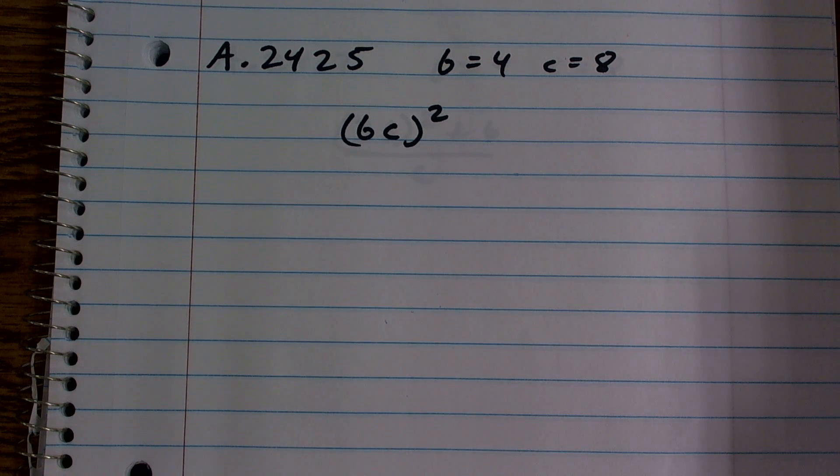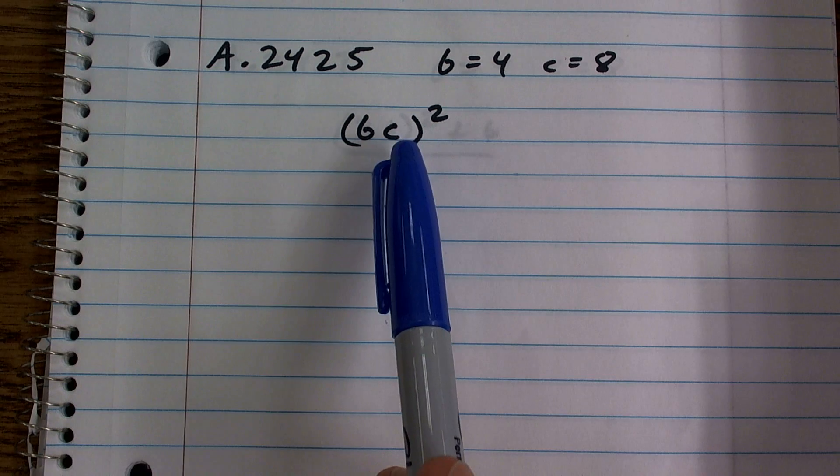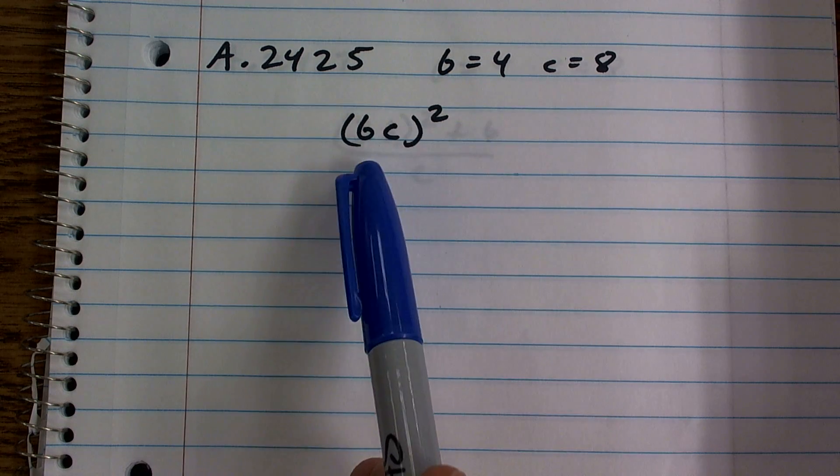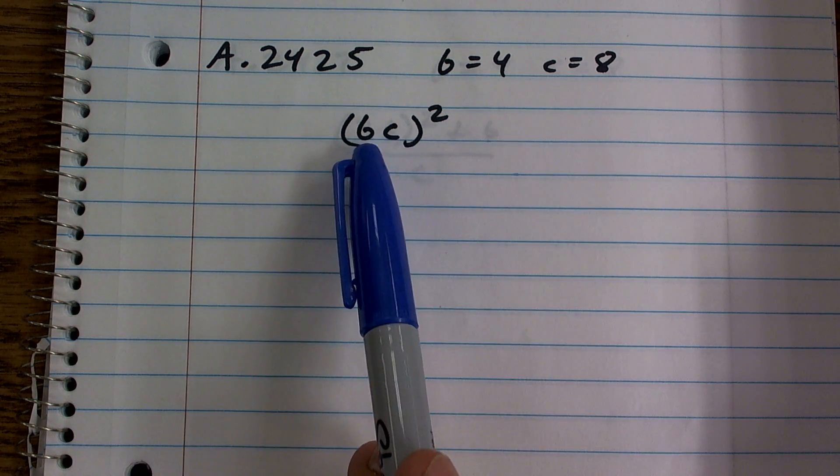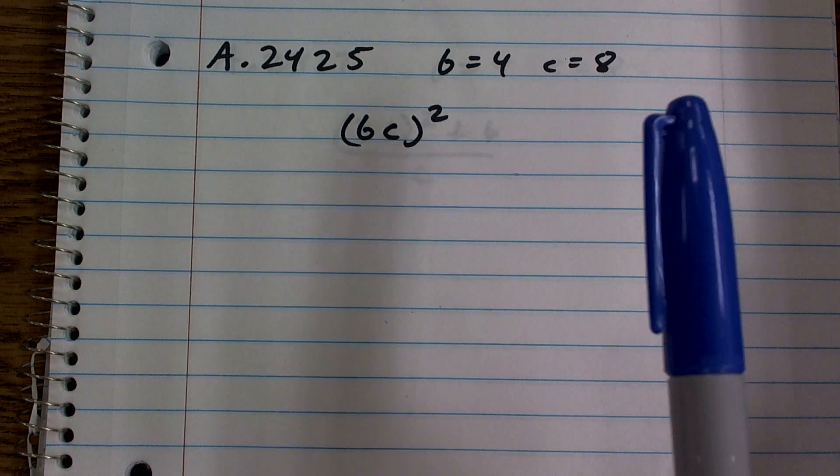OK, here we have b equals 4, c equals 8. My algebraic expression is a number b times a number c squared.